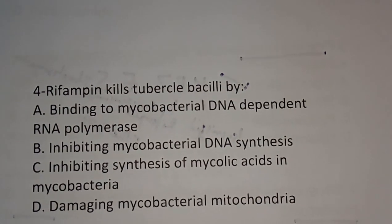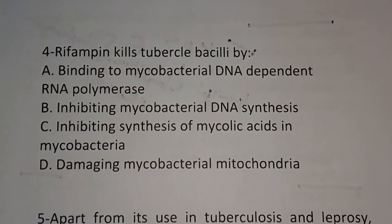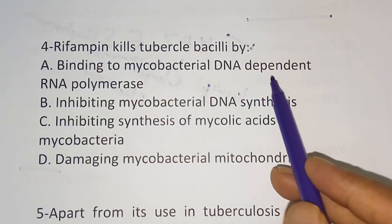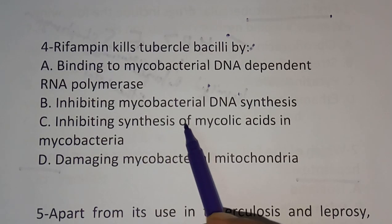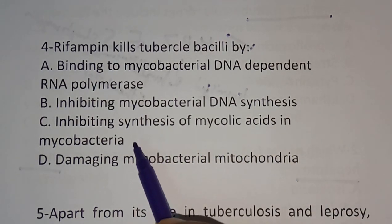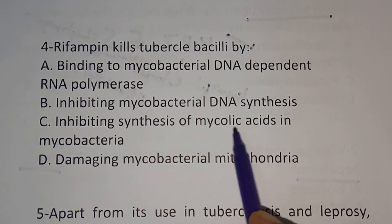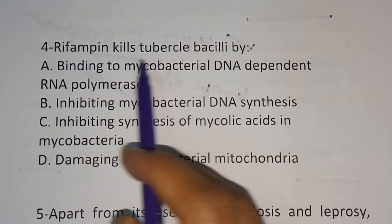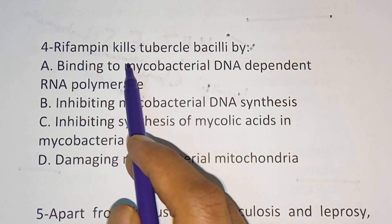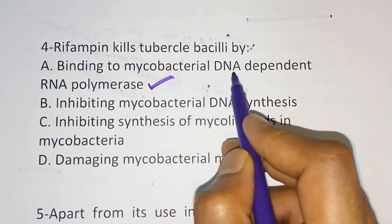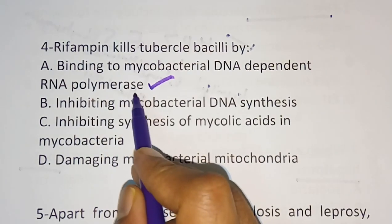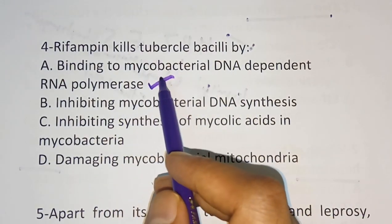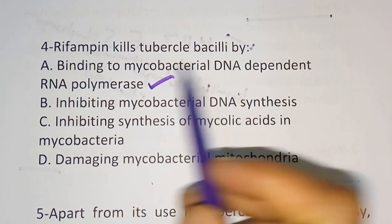Question number 4: rifampicin kills tubercle bacillus by — option A: binding to mycobacterial DNA-dependent RNA polymerase, option B: inhibiting mycobacterial DNA synthesis, option C: inhibiting synthesis of mycolic acids in the mycobacteria, option D: damaging mycobacterial mitochondria. The correct answer is option A — rifampicin kills tubercle bacillus by binding to mycobacterial DNA-dependent RNA polymerase.